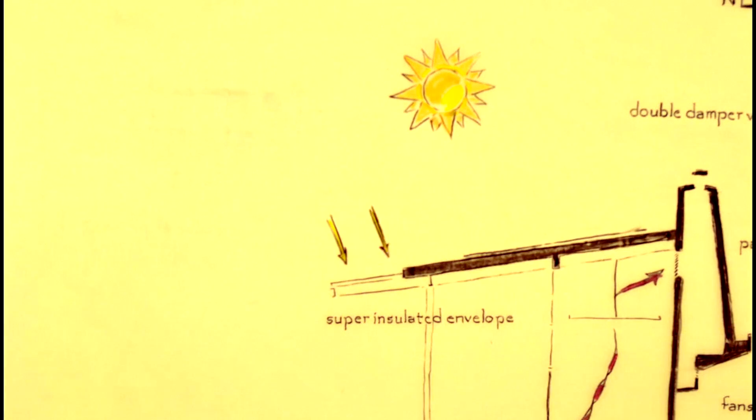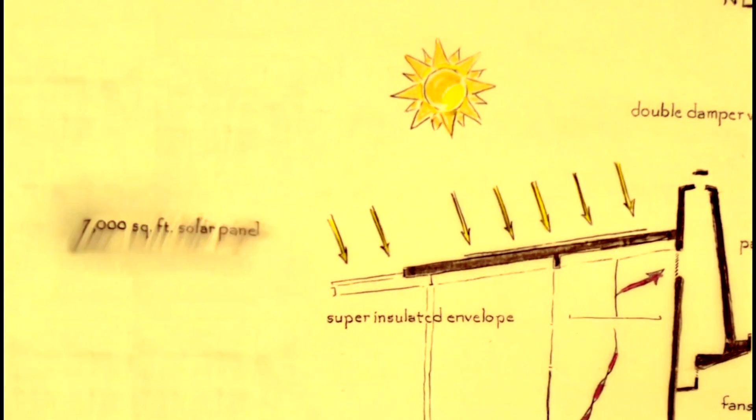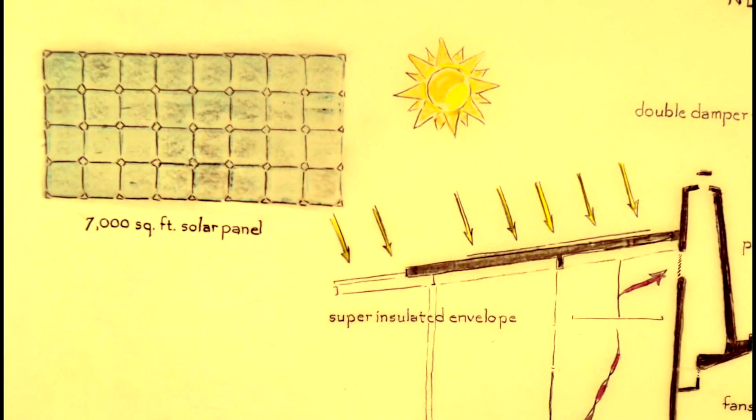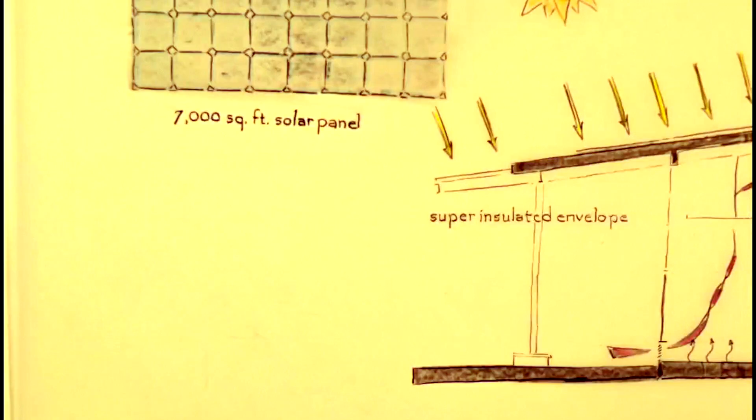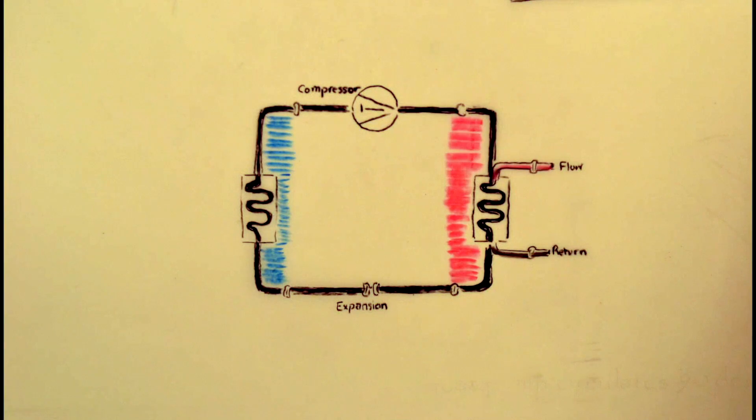The key to the building's net-zero capability is the 7,000-square-foot rooftop solar panel array powering the smart mechanical systems. 20% of the array consists of translucent panels that overhang the building's entrance and can be observed from underneath. The solar panel array provides energy for all the building's electrical needs, including a heat pump system that is four times more efficient than traditional electric heating in the Northwest.